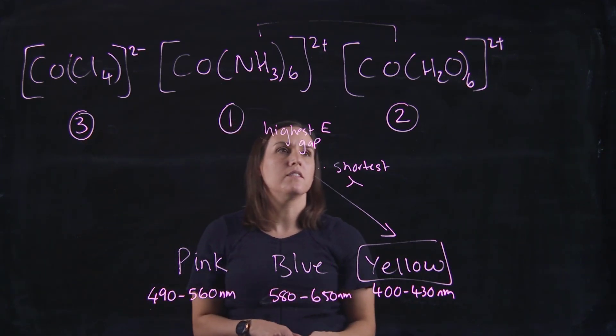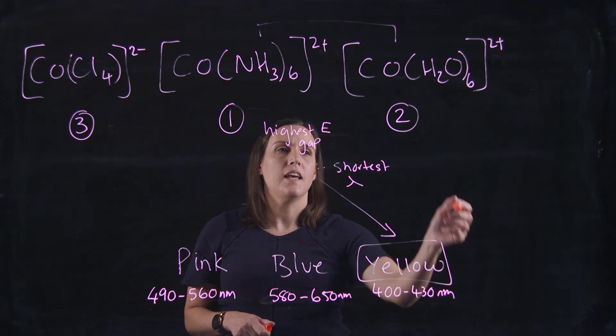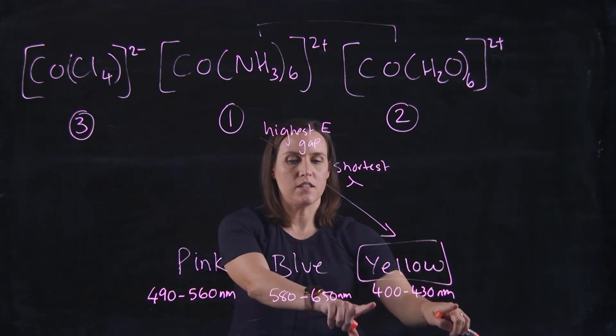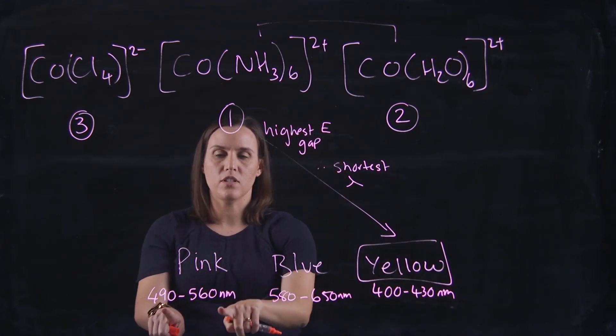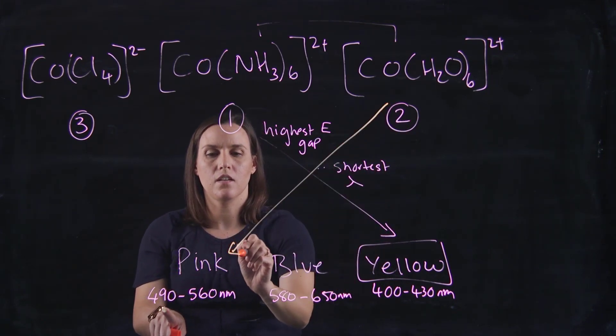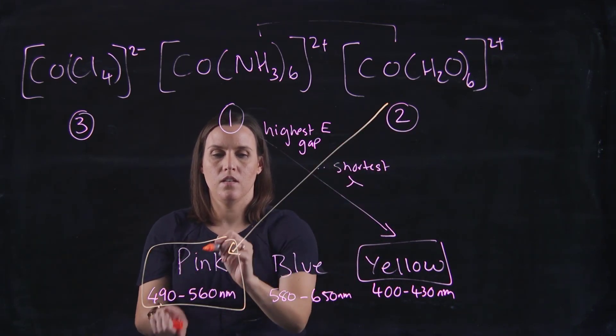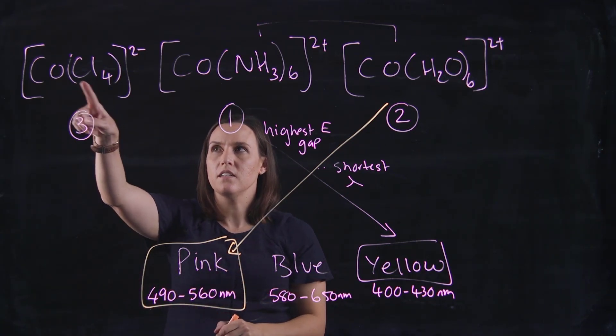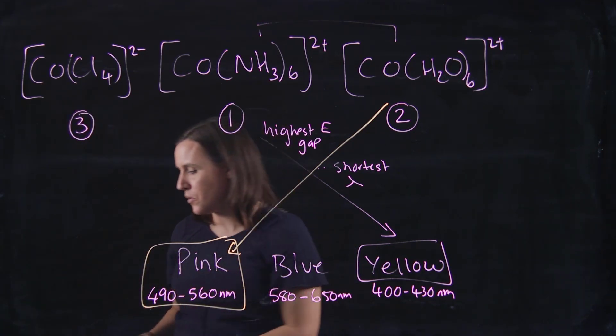The next shortest wavelength is pink, so the water would be pink. That leaves the chloride with cobalt to be blue.